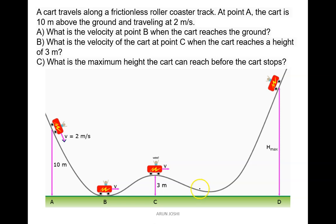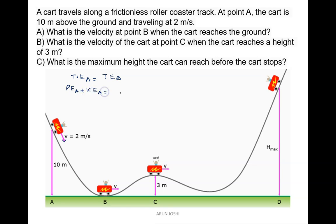We can apply the mechanical energy conservation from point A to point B. According to conservation of energy, total energy at point A equals total energy at point B. So potential energy at point A plus kinetic energy at point A equals potential energy at point B plus kinetic energy at point B. We take the ground as the reference level.